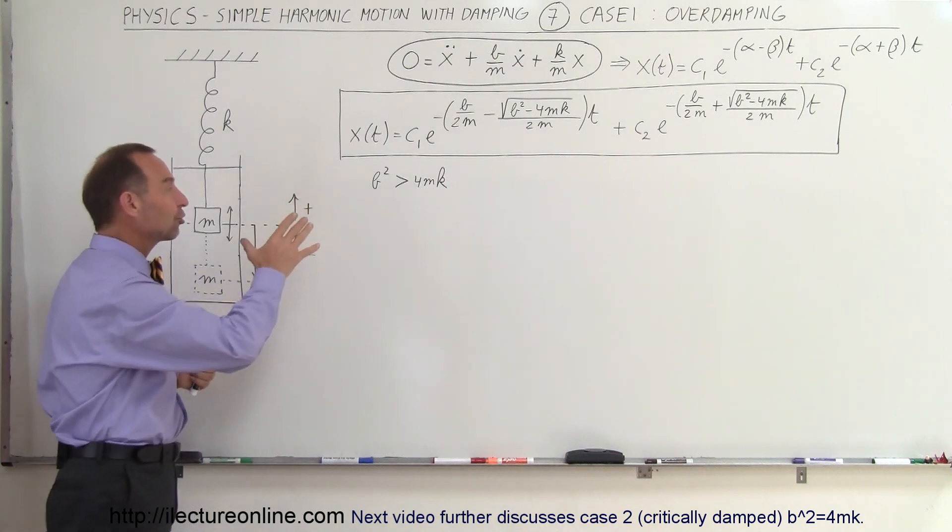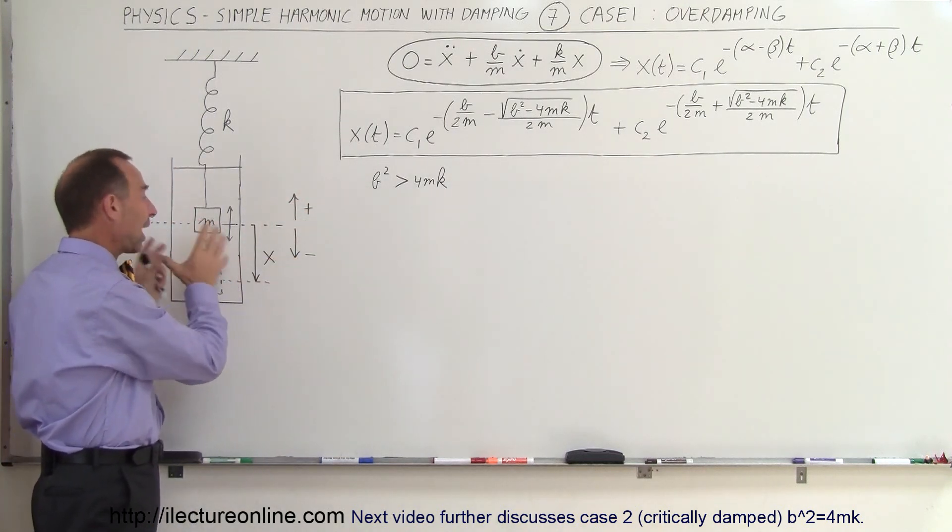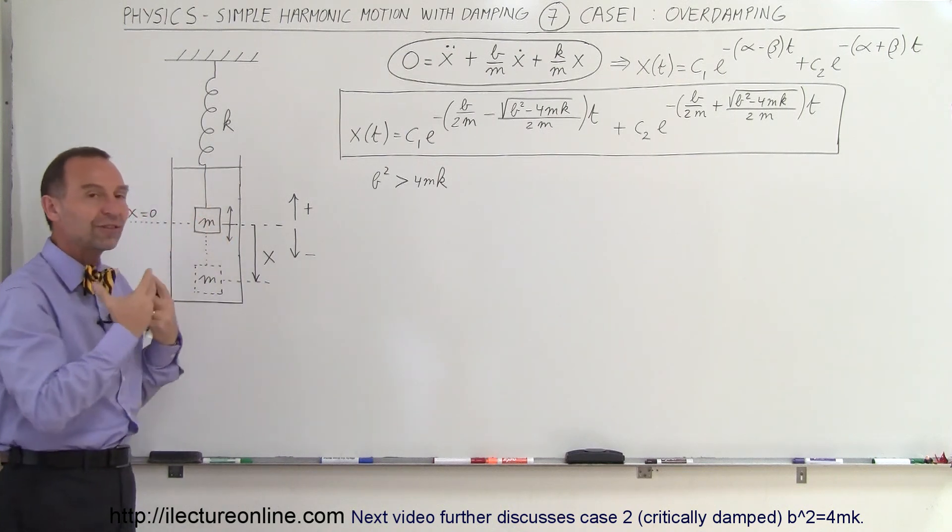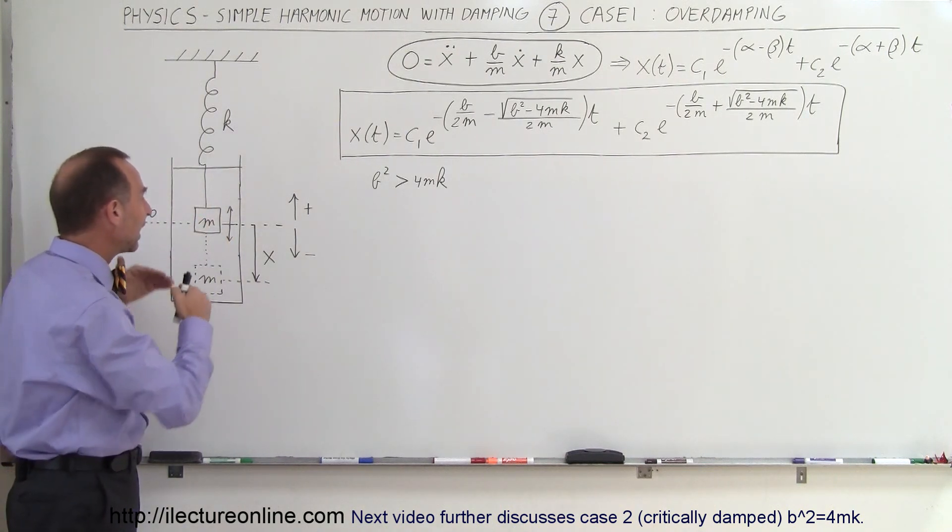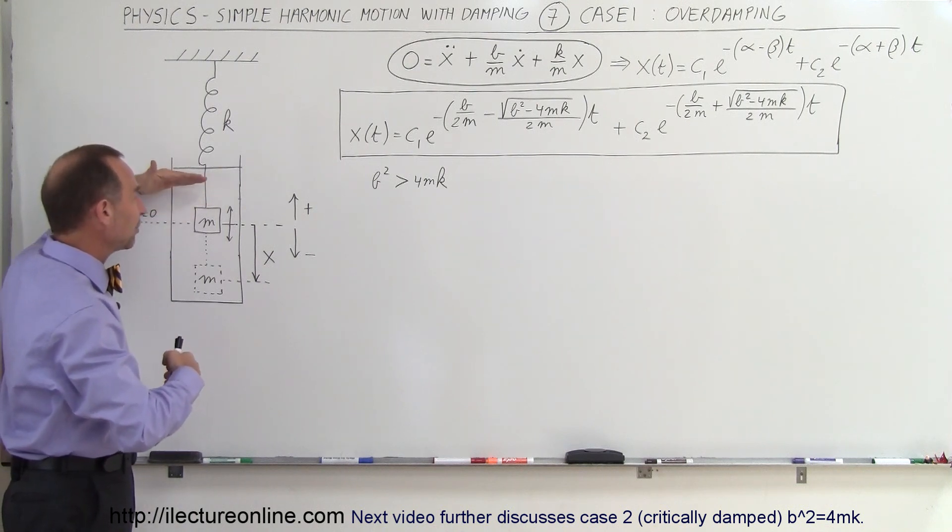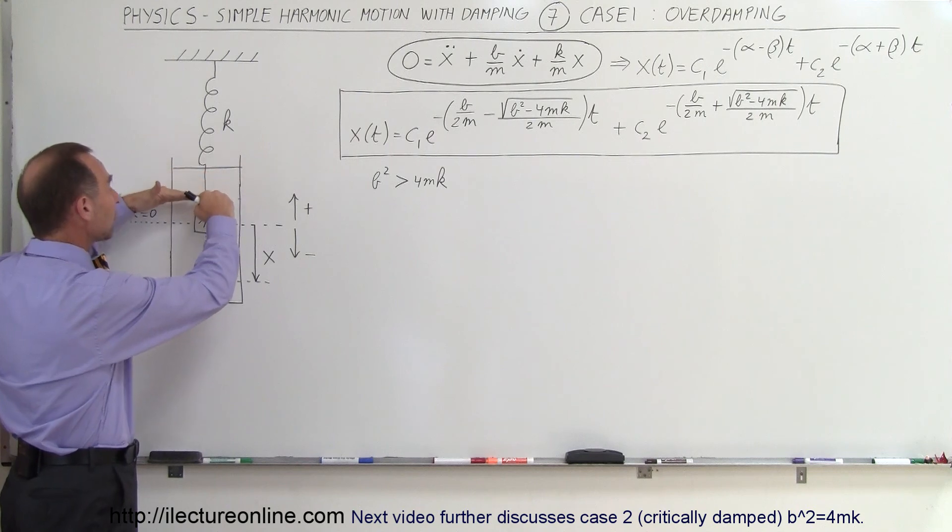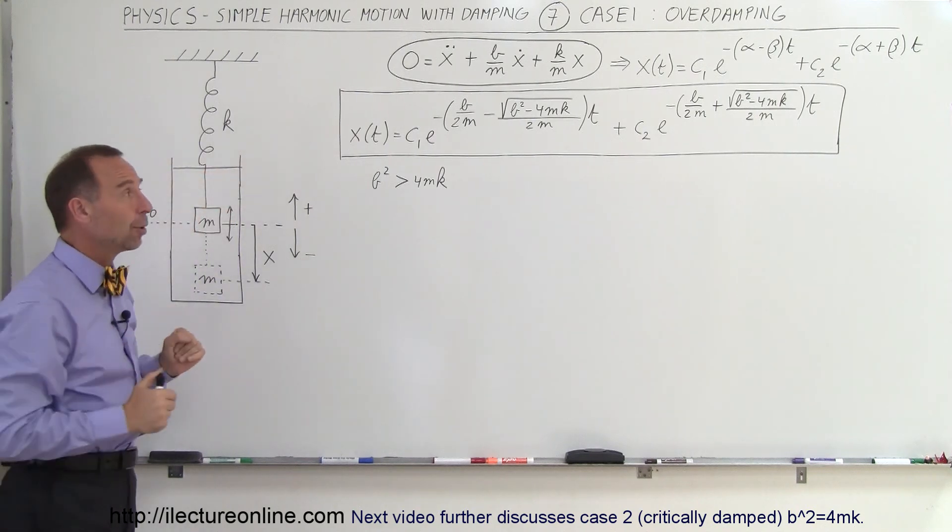If B is a very large quantity, what that means is that there's a lot of resistance to the motion in this damping effect. There's a large dampening effect. And because of that, if you then displace the mass, even though the mass may be large and k may be large, if B is very large, it's going to take a long time for the mass to get back to the equilibrium point.